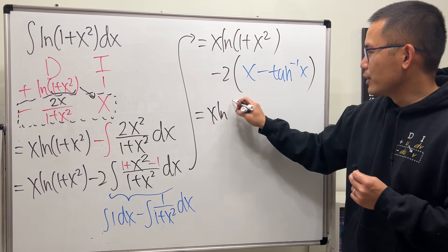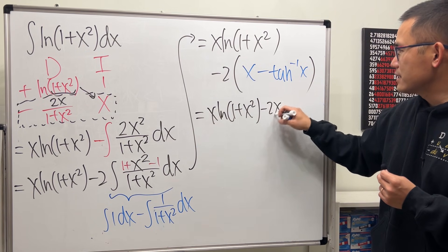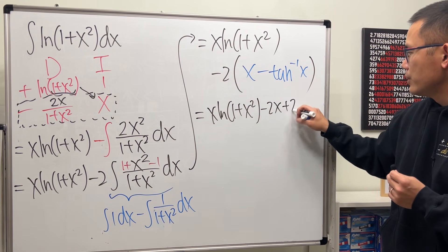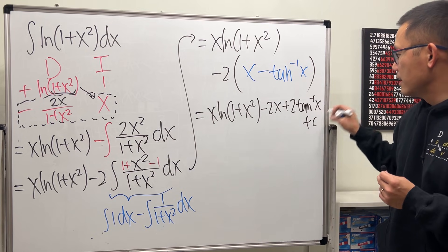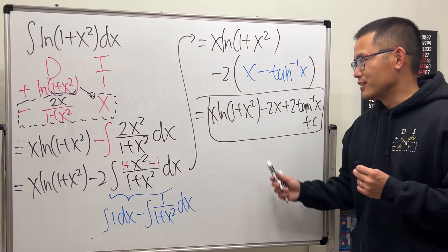So, let me write this down one more time, and then we will have minus 2x plus 2 inverse tangent of x, and then after the plus c, we are all done. So, just like this.